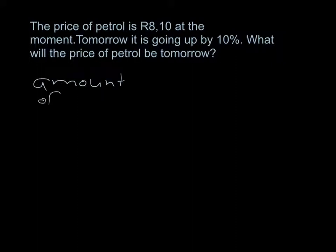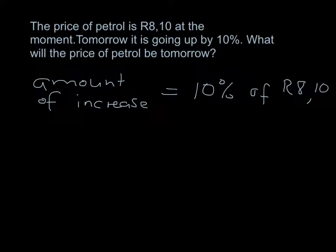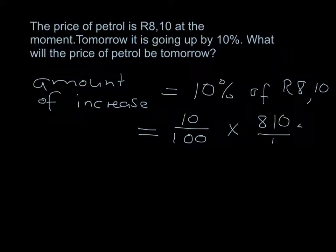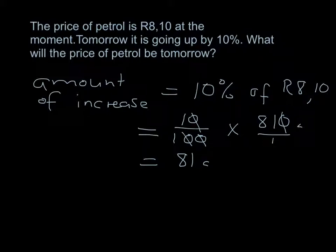The amount it's going up by is 10% of 8 Rand 10 cents. To avoid dealing with decimals, let's convert to cents: 8 Rand 10 is 810 cents. So the calculation is 10 over 100 times 810 cents. Dividing top and bottom by 10 twice gives 1 over 1 times 81 over 1, which is 81 cents. So the amount of the increase is 81 cents.